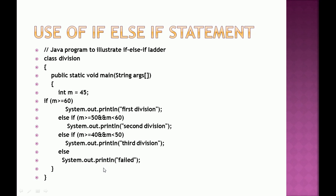Here is a program to demonstrate divisions obtained in examinations. Variable 'm' is integer type initialized to 45. In the first if part, the condition is m greater than or equal to 60 — this is false for 45. The control moves to else-if: 45 greater than or equal to 50 — also false. Moving to the next else-if: m greater than or equal to 40 — true, since 45 is greater than 40. So this statement executes and we get output as 'third division'.